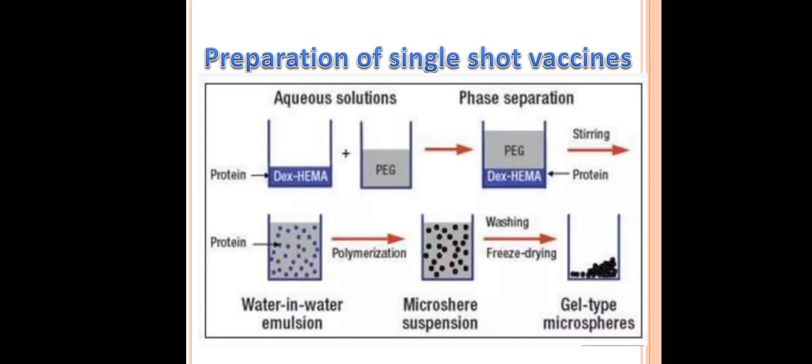How do we prepare a single shot vaccine? First, the protein or antigen is mixed with Dex-HEMA — dextran hydroxyethyl methacrylate — which is then mixed with PEG, polyethylene glycol. PEG is a polymer and Dex-HEMA is a biopolymer. Both are mixed in aqueous solution and then phase separation occurs. The mixture is stirred vigorously at a defined RPM, after which the antigen forms a water-in-water emulsion that undergoes polymerization to form a microsphere suspension. These microsphere suspensions are then washed and freeze-dried to collect gel-type microspheres.